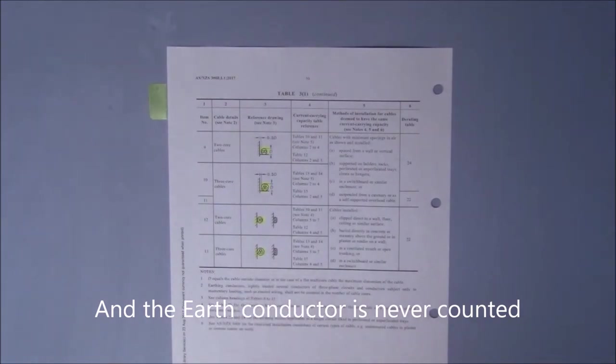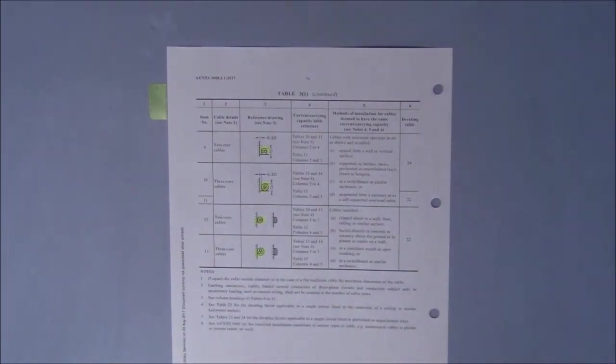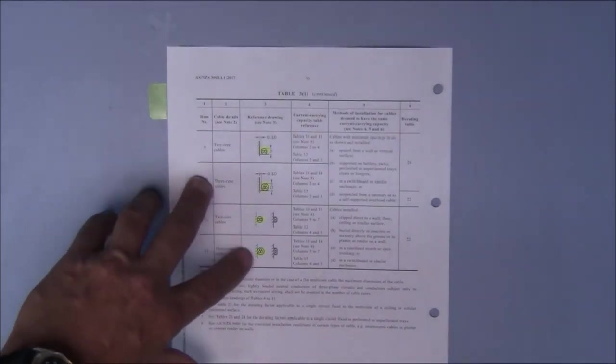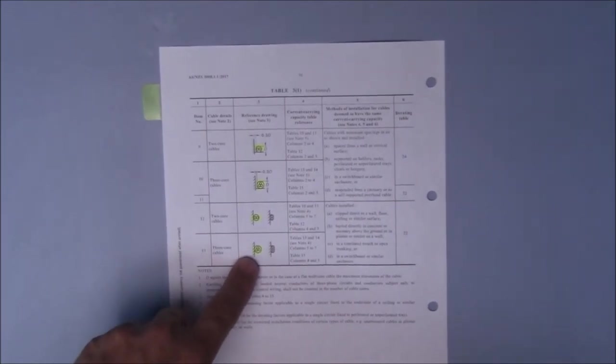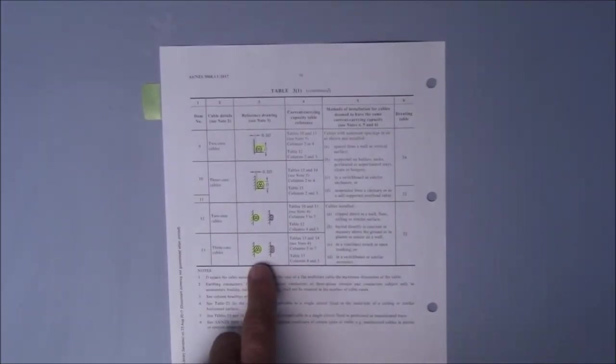The next column over gives a reference drawing on how the cable is installed. This particular one is clipped directly to a vertical surface. Item 13 meets the requirements most appropriately.